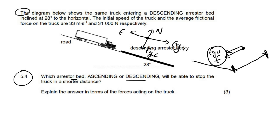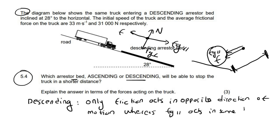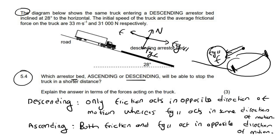Explaining in terms of forces: on the descending arrestor bed, only friction acts in the opposite direction of motion, whereas F_G parallel acts in the same direction of motion. On the ascending arrestor bed, both friction and F_G parallel act in the opposite direction of motion. Therefore, the ascending arrestor bed will be able to stop the truck in a shorter distance. That's the answer with the reason.